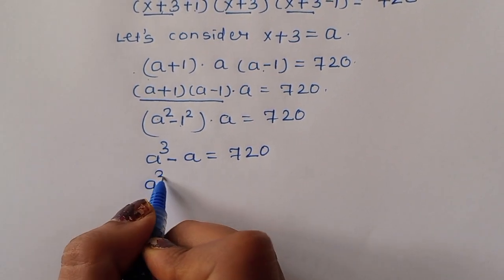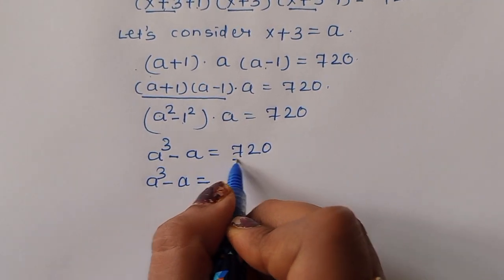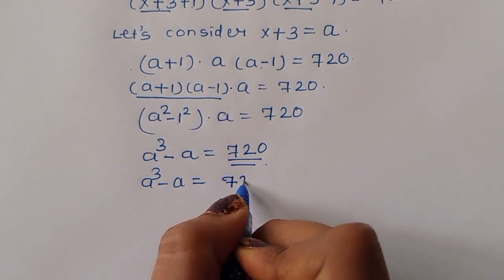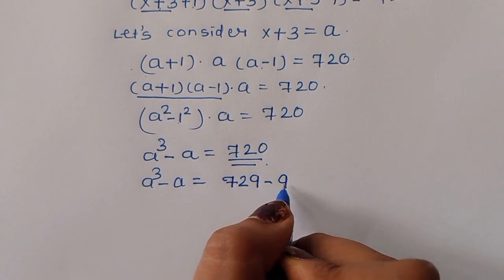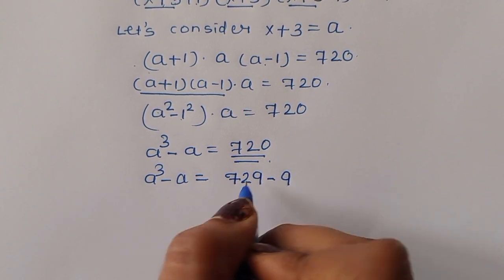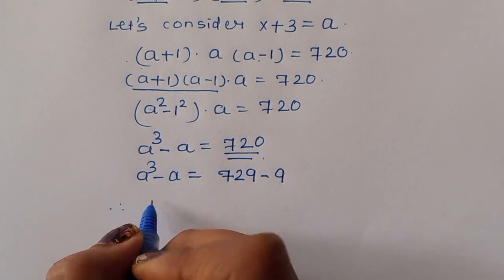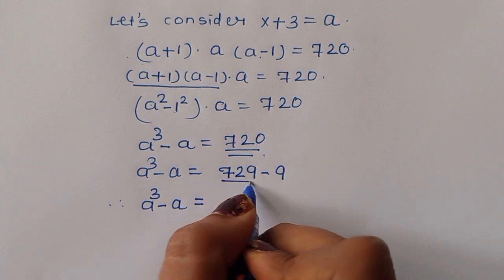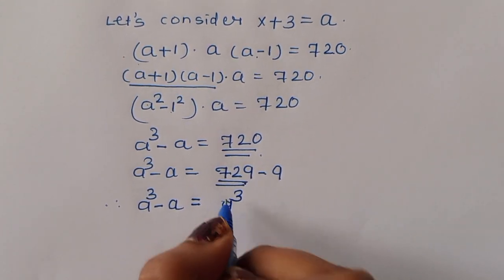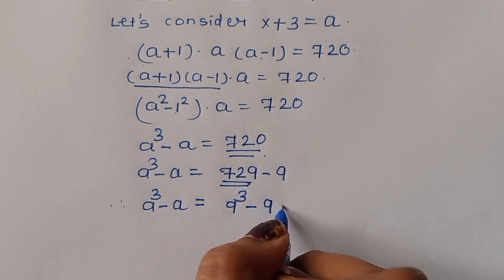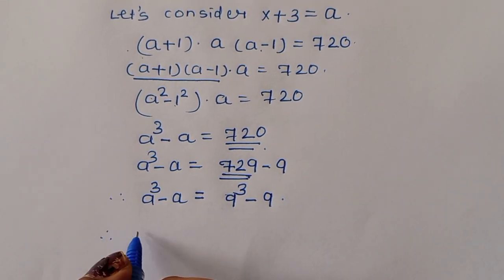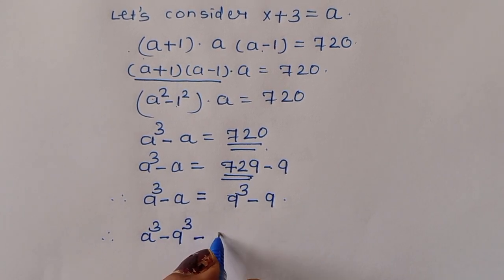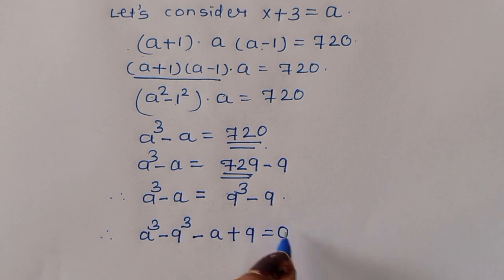We need to write 720 in cubic form. We note that 729 minus 9 equals 720, and 729 is 9³. So a³ - a = 9³ - 9. Rearranging: a³ - 9³ - a + 9 = 0.